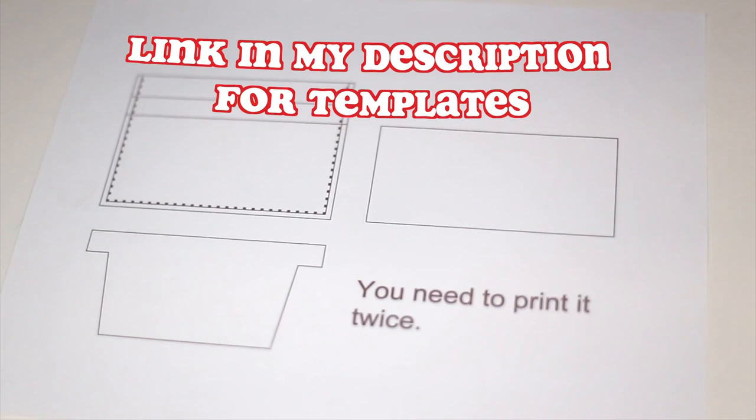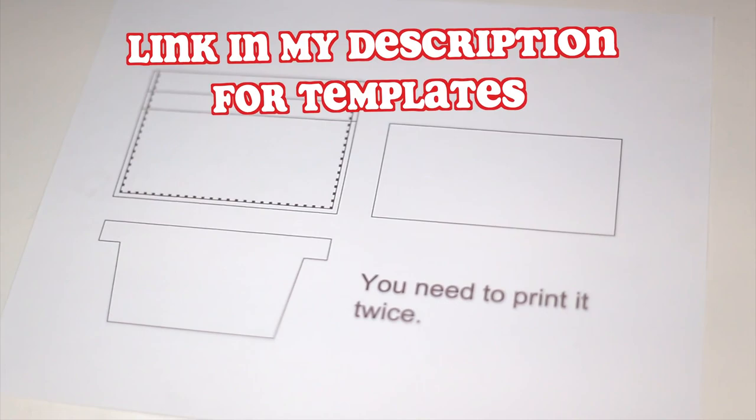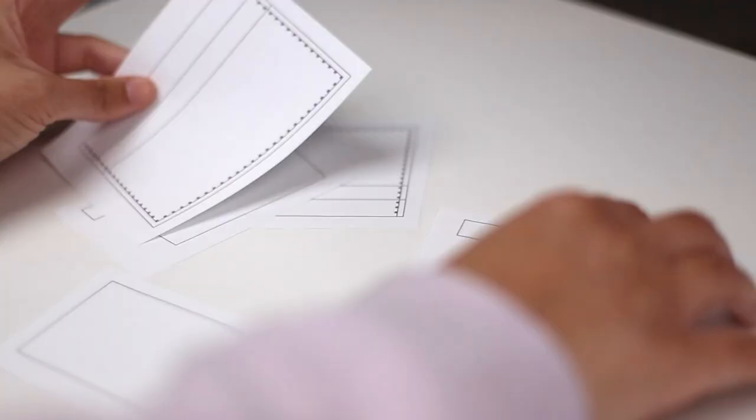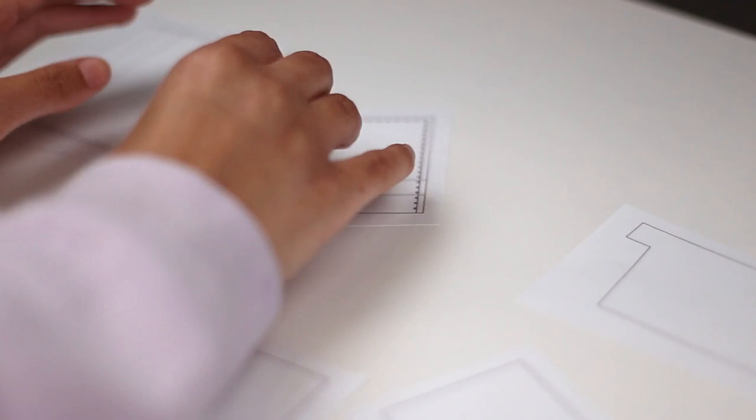Alright guys, so the first thing we're gonna need is a template for the shape and size of our wallet. You can find a download for this template in the link in my description. Basically what we're gonna do is cut all the pieces out with some scissors. Once you're done, you should have two larger squares, one smaller square, and one oddly shaped square which will be a pocket.